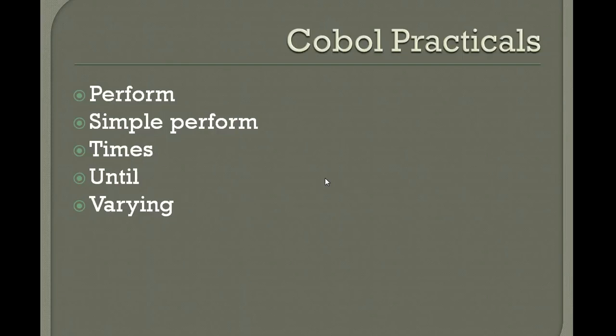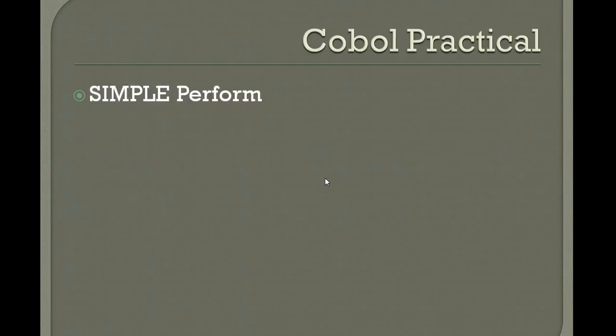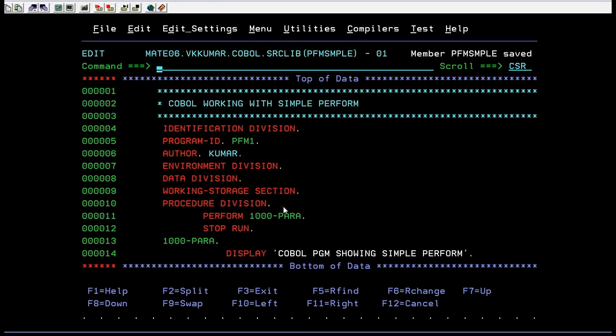We have simple PERFORM, TIMES, UNTIL, and VARYING. Today in this video, I'm going to show you how to use a simple PERFORM. Now let me connect you to the mainframe terminal to show you how we write a COBOL program using simple PERFORM.